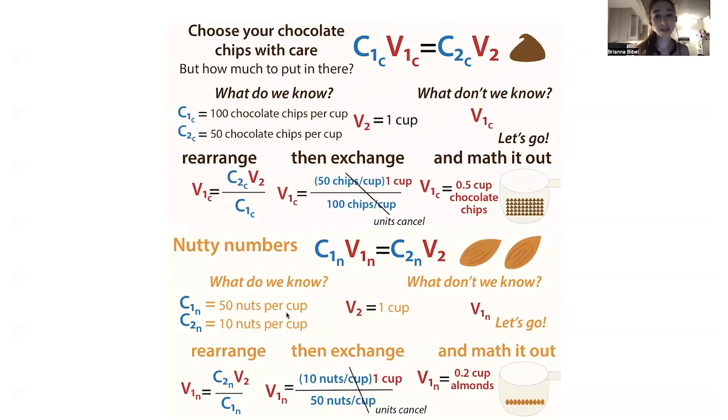We're going to do this by rearranging, then exchanging, and math it out. We take the values, we write out what we know, and we plug it into this formula. After we rearrange to isolate the thing that we want to find, and we want to find this V1C, the initial volume of your chocolate chips, we plug in our numbers, and we math it out, and we see that we need to add half a cup of chocolate chips.